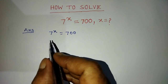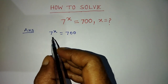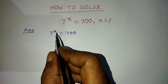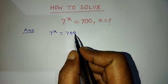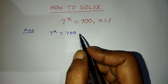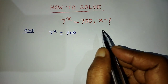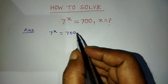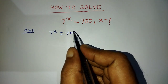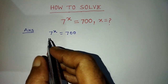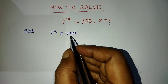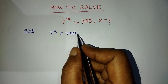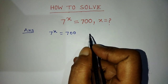Our exponential equation is 7 to the power x is equal to 700. To find the value of x from this exponential equation, first of all we have to write 700 in exponential form.